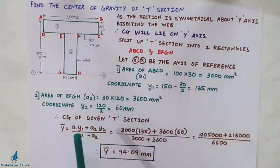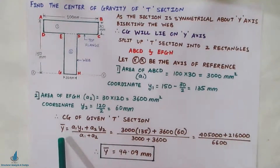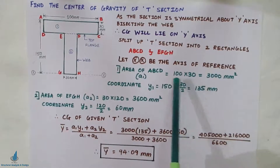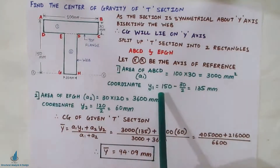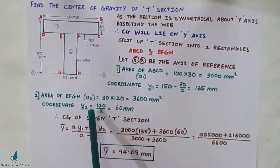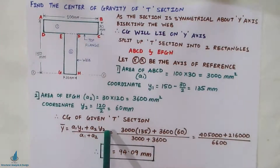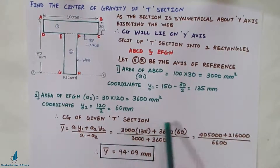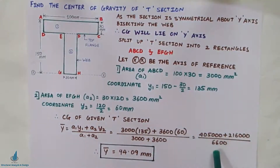The center of gravity of the given T-section is calculated using the formula: ȳ = (A₁Y₁ + A₂Y₂) / (A₁ + A₂). We have calculated A₁, Y₁, A₂, and Y₂. All quantities are known, so we substitute them into this formula. The substitution and its simplification are shown here.